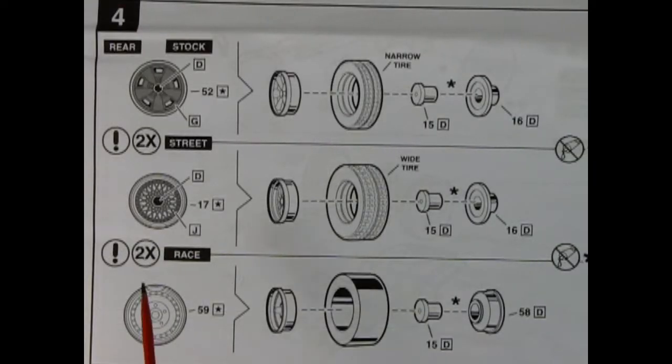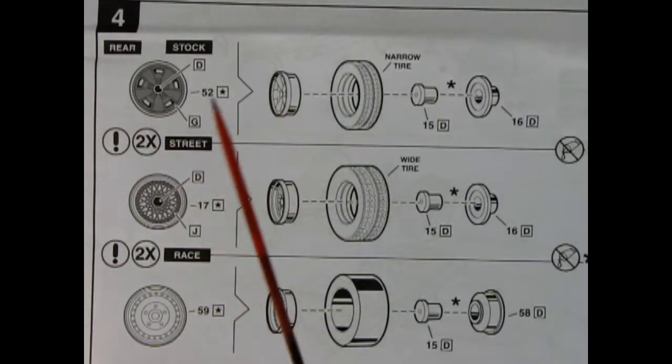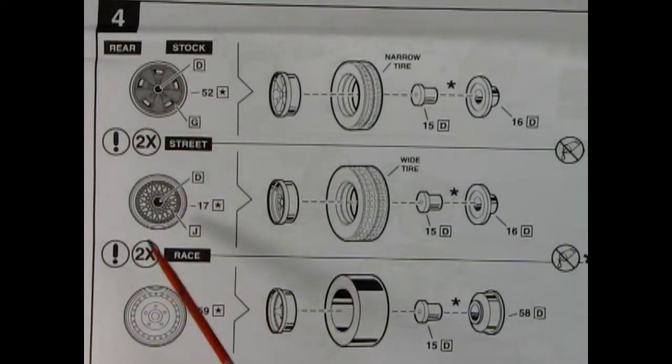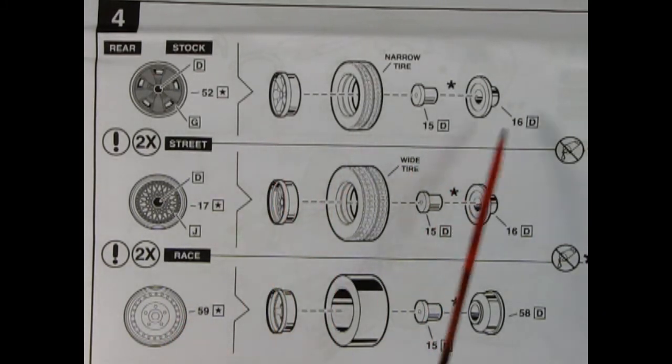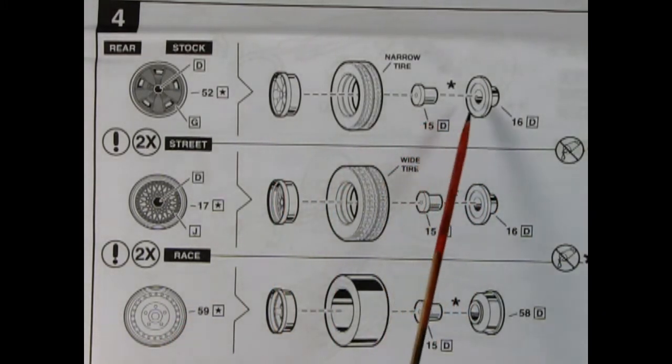Panel 4 shows us our wheel assembly for the back of the car. Here's our factory stock wheel, there's our street wire wheel, and we've got these nice steel drag racing wheels. So again they all go through the tires and into the wheel backs. And here we have the difference of the drag slicks and a deeper style wheel back for our dragster.